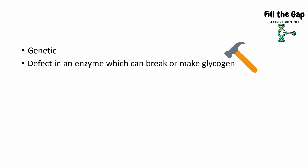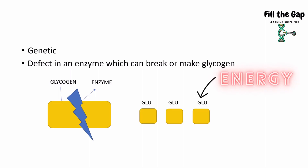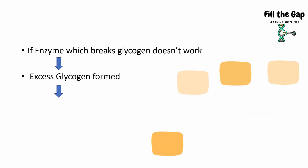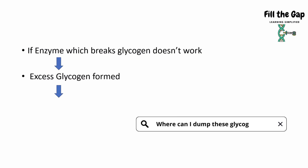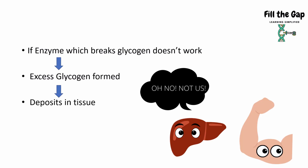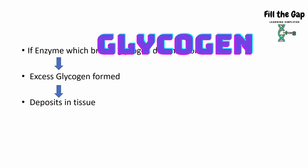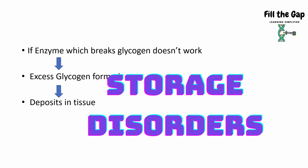This is a genetic disorder and the defect lies in an enzyme which can break or make glycogen. If the enzyme which is supposed to break the glycogen does not work, excess glycogen is formed. The body starts looking for places to store this excess glycogen and deposits it in the tissues. That is why this is called glycogen storage disorders — it causes disorders in our body.